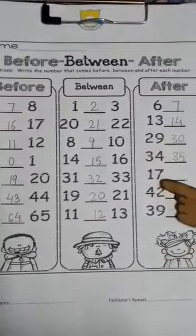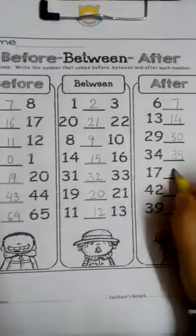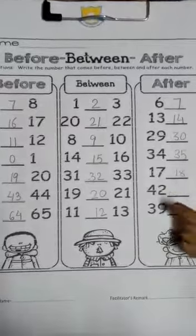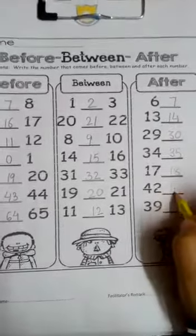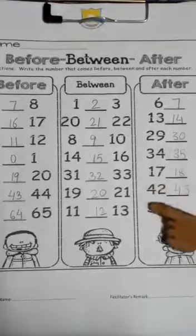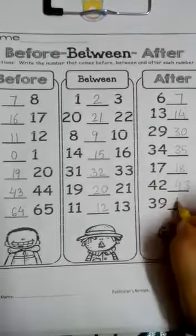What comes after 17? Yes, you write 18. What comes after 42? Yes, 43. What comes after 39? Yes, you write 40.